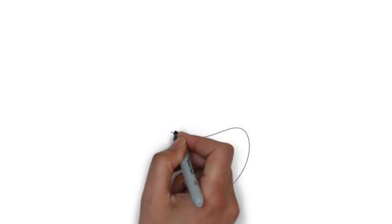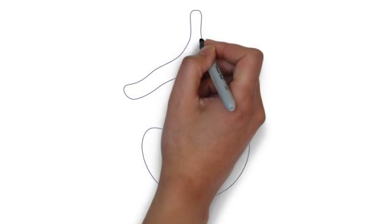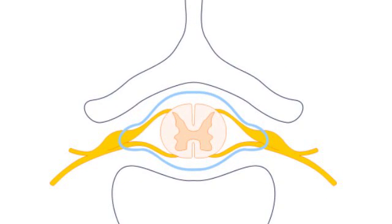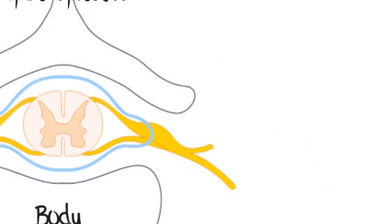Let's place that in the vertebra so you can see its relation. You'll see the spinous process of the vertebra, the body of the vertebra, and the spinal cord in the canal.